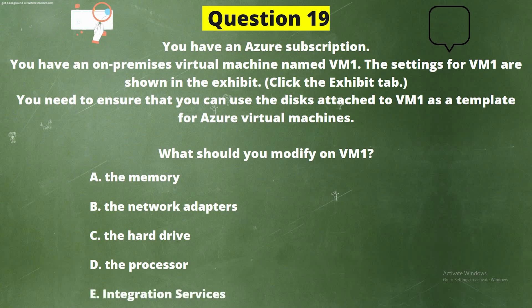Explanation: Virtual networks can be in the same or different regions and from the same or different subscriptions. When connecting VNets from different subscriptions, the subscriptions do not need to be associated with the same Active Directory tenant. Configuring a VNet-to-VNet connection is a good way to connect VNets. It is similar to creating a site-to-site IPsec connection to an on-premises location — both use a VPN gateway to provide a secure tunnel using IPsec/IKE.